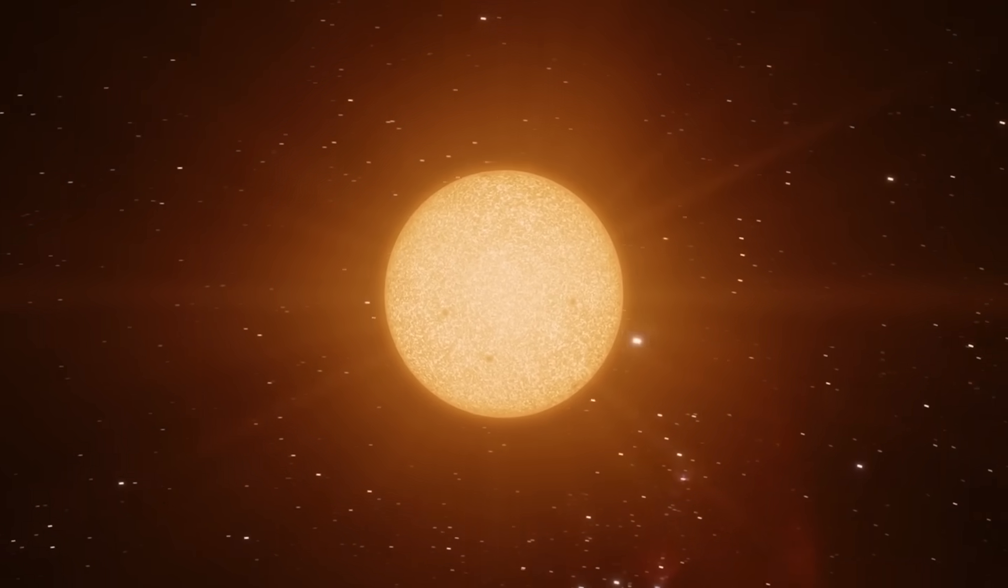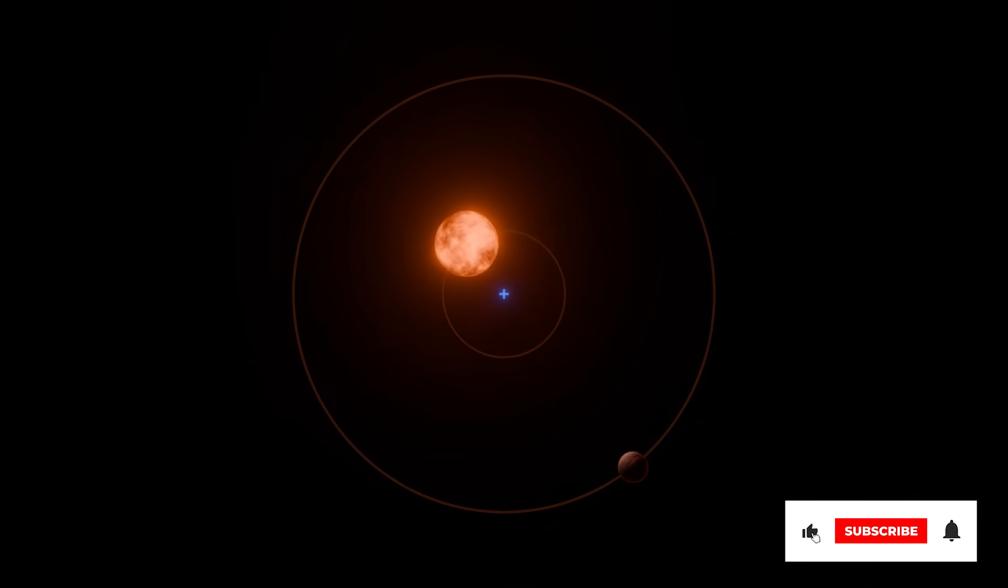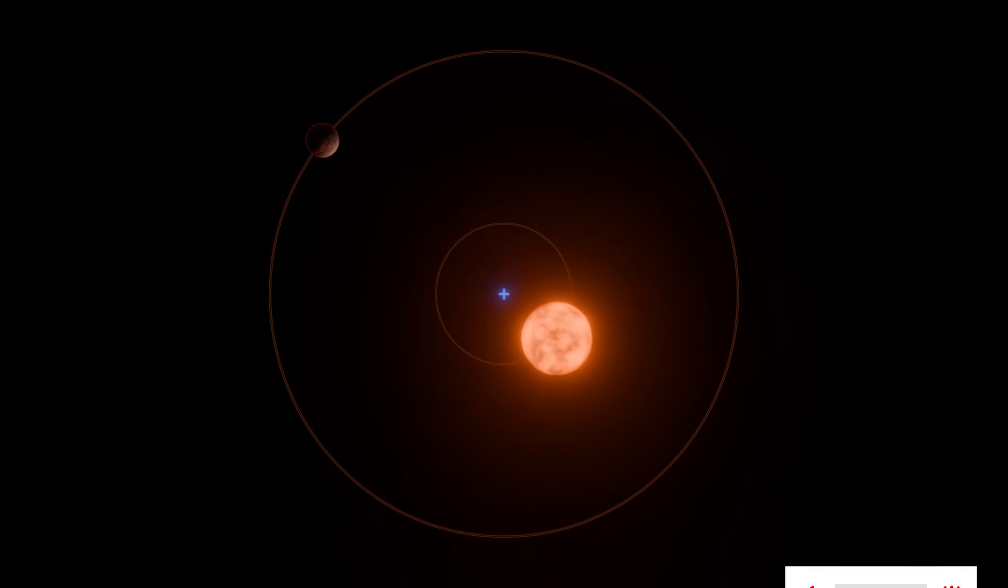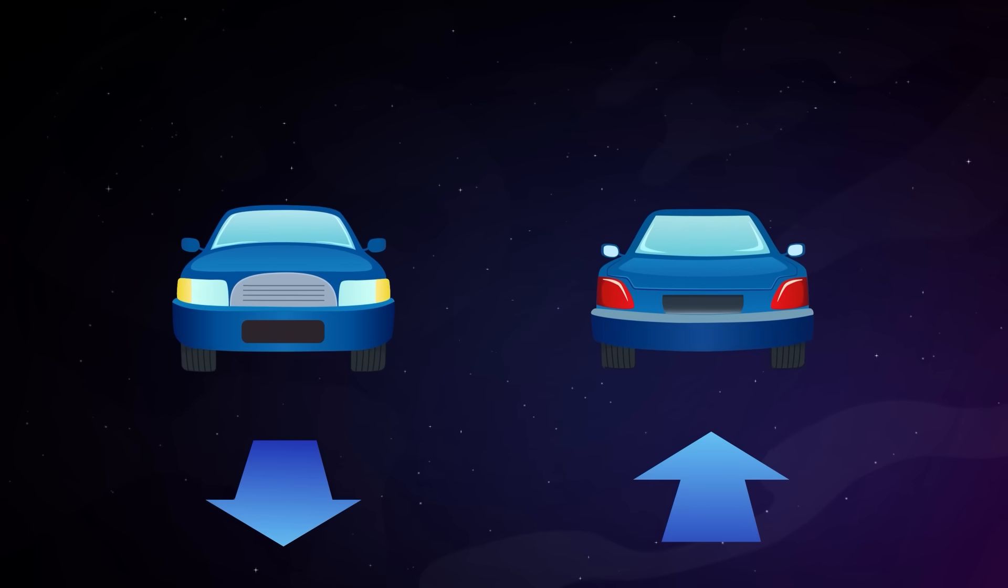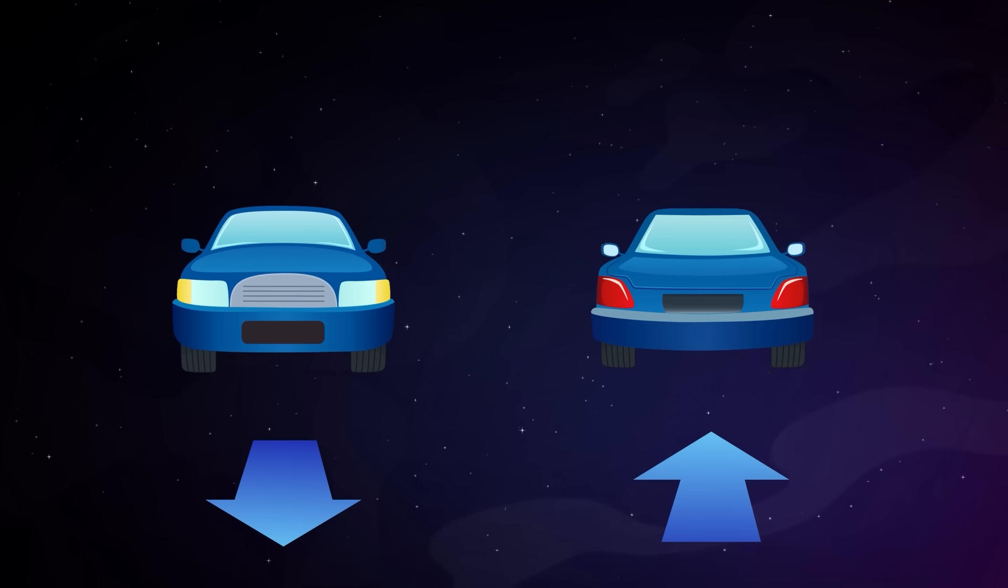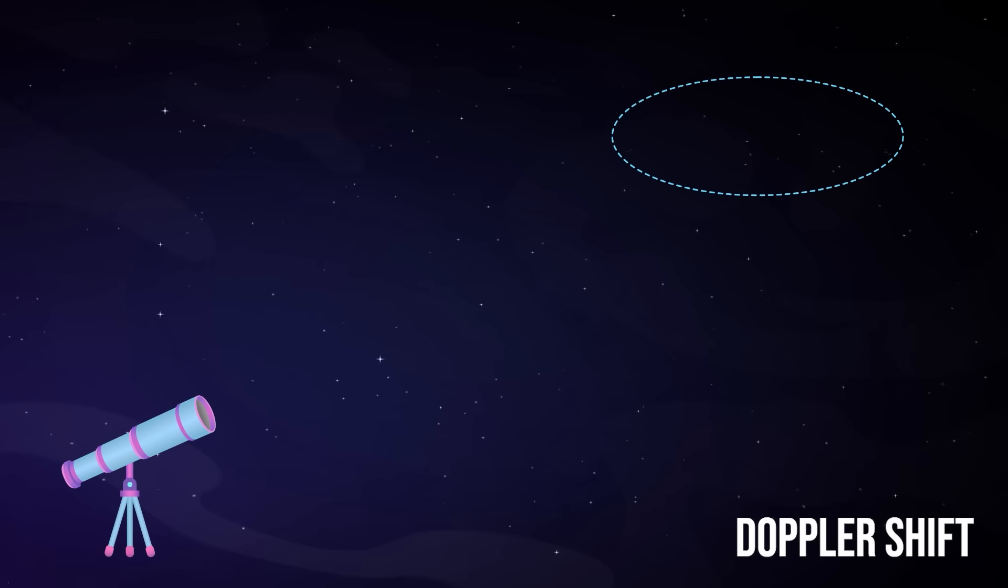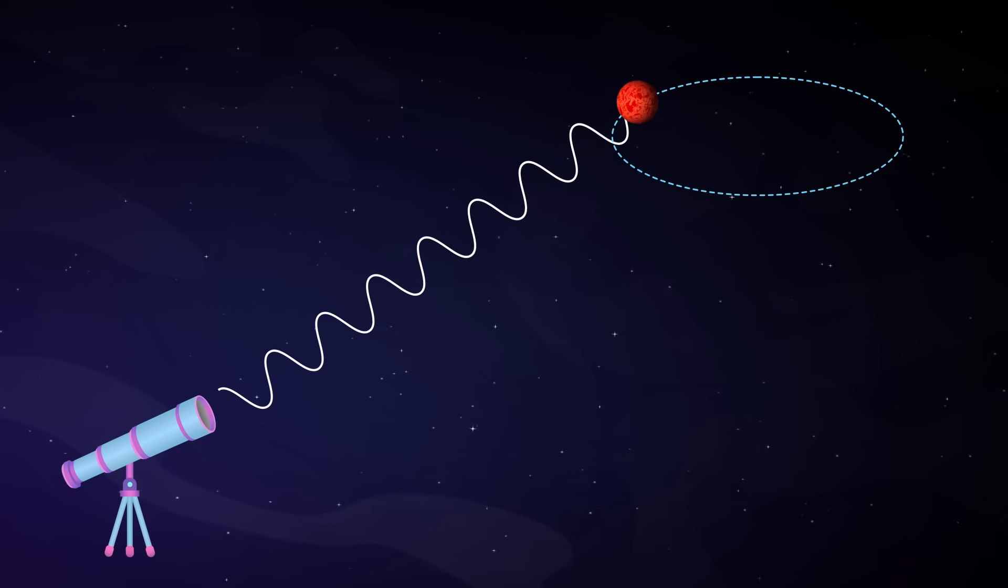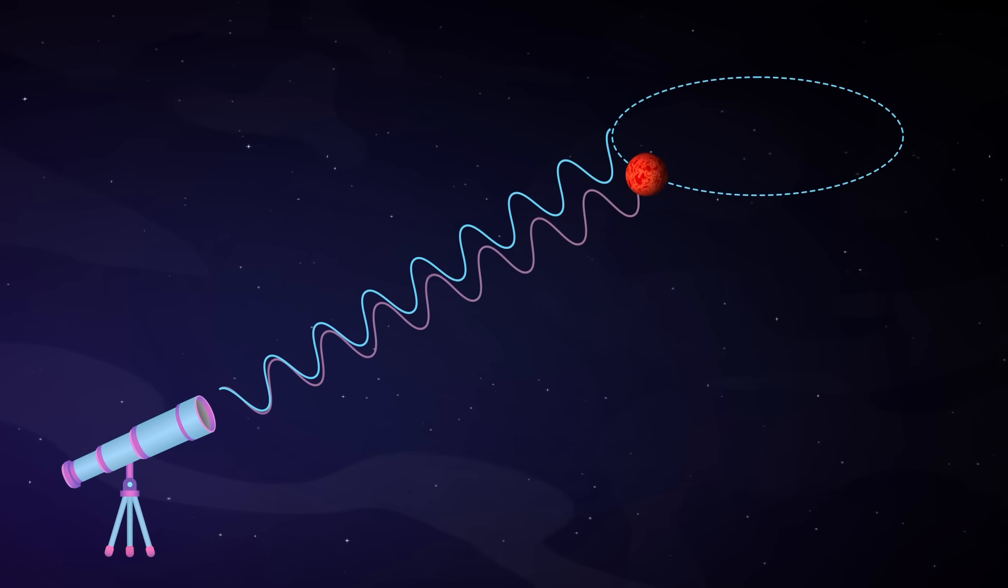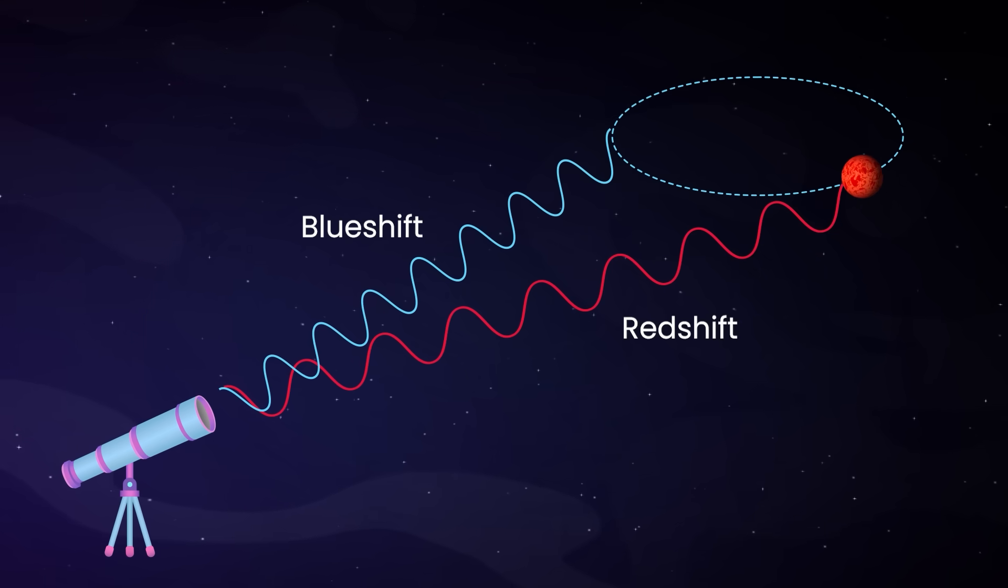It wasn't just Betelgeuse's brightness that changed. Its motion did too. Specifically, astronomers noticed changes in its radial velocity, the speed at which the star moves toward or away from us along our line of sight. To picture this, imagine watching a car drive straight toward your camera and then away from it. That direct in-and-out motion is what radial velocity measures, not sideways movement, just forward or backward from our point of view. Astronomers detect this kind of motion using a phenomenon called the Doppler shift. When a star moves toward us, its light waves get compressed, shifting light slightly toward the blue end of the spectrum. If it moves away, the light stretches out and shifts toward the red. By carefully measuring how the star's light shifts over time, scientists can figure out how fast it's moving along that line.